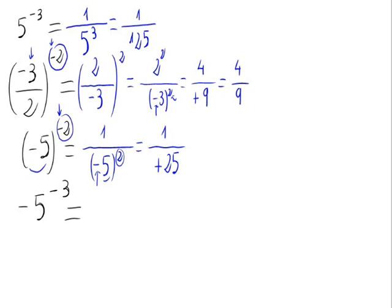The last example is a negative number, minus 5, raised to a negative exponent. But, in this case, the exponent only affects the 5, not the minus sign, because there is no parenthesis between the number and the exponent.